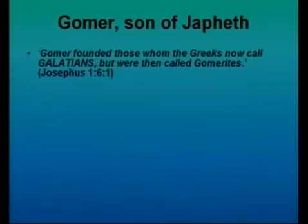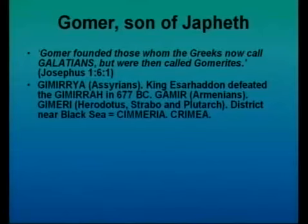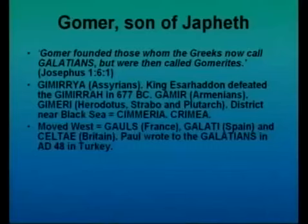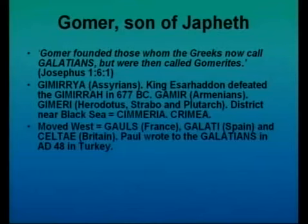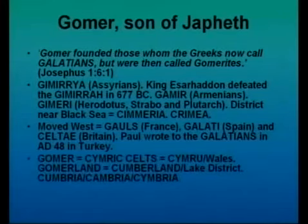Now we get to Gomer, the son of Japheth. According to Josephus, he was the founder of the Galatians, originally known as the Gomerites. They were known by the Assyrians as the Gemiria — King Esarhaddon defeated the Gemira in 677 BC. The Armenians referred to them as the Gemir, and Herodotus, Strabo, and Plutarch all called them the Gemiri. They settled in the Black Sea area in a place called Chimeria — also known as the Chimerians — which we now call the Crimea. Some of them moved west and became the Gauls into France, or the Galatai in Spain, and the Celti in Britain. In the New Testament, Paul wrote to the Galatians in Asia Minor — modern-day Turkey.